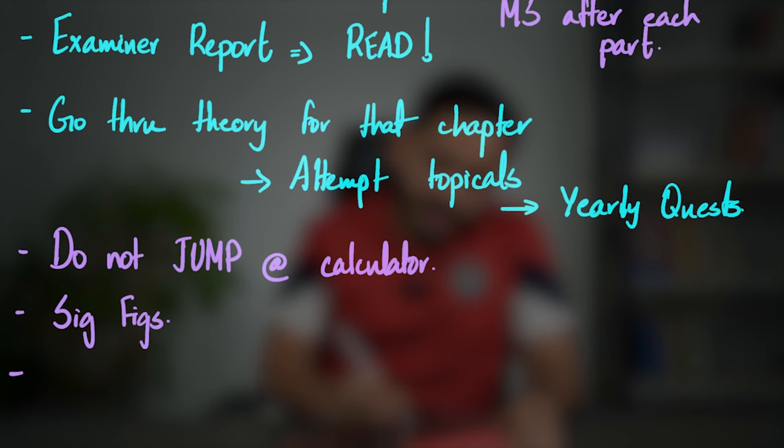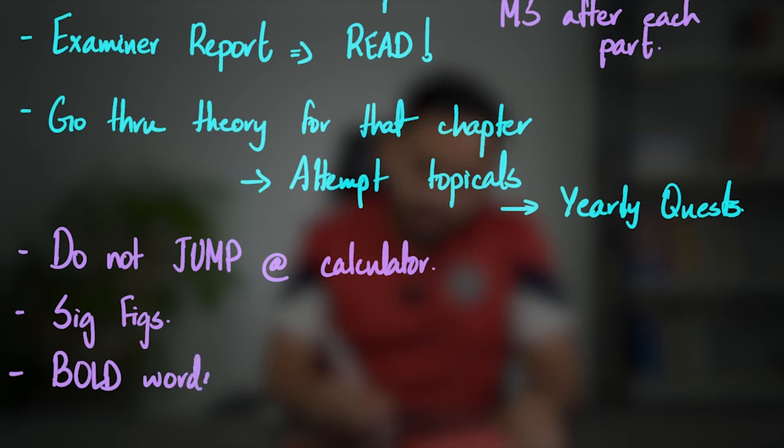Units are generally not a problem in AS Physics as they are usually provided. In MCQs, pay attention to words that are bold — these are meant to draw your attention to exactly what the examiner is asking for. If you miss a bold word, your entire reasoning and answer could flip and be wrong. Best of luck for your exams — if you need more support, feel free to reach out.